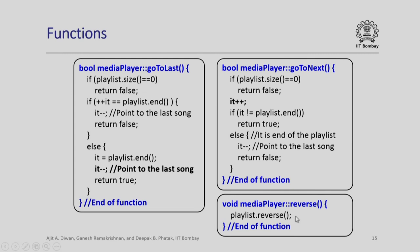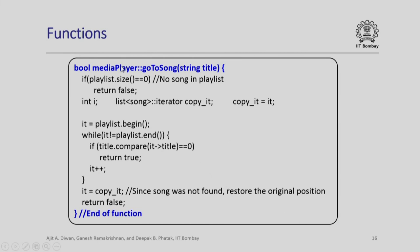Reverse is very simple — playlist dot reverse is a single call which will reverse the entire playlist. Next let us look at the implementation of go to song. I check the size of the playlist; if it is 0 there is no song and I return false. Otherwise I set IT to playlist dot begin and while the playlist has not ended I iterate, using the comparison operation on title. If title dot compare returns 0 I return true. At the end, if the song was not found, I restore IT to the original position using copy IT and return false.